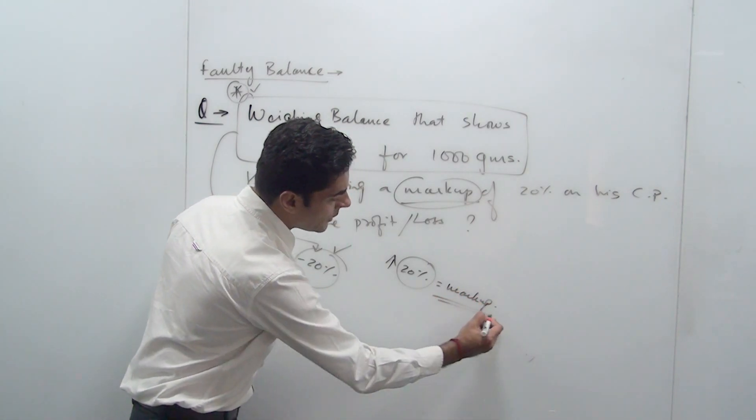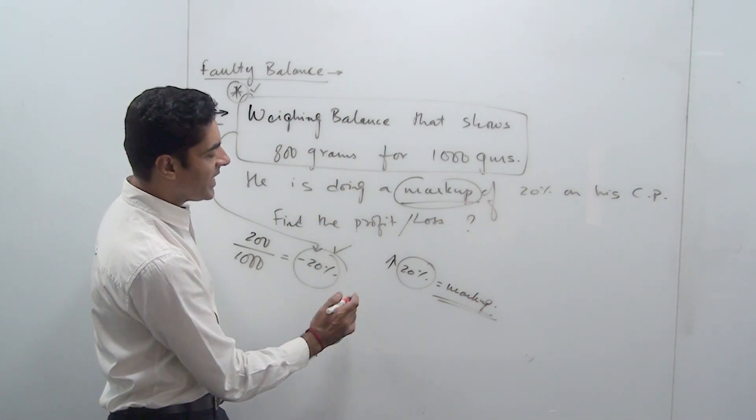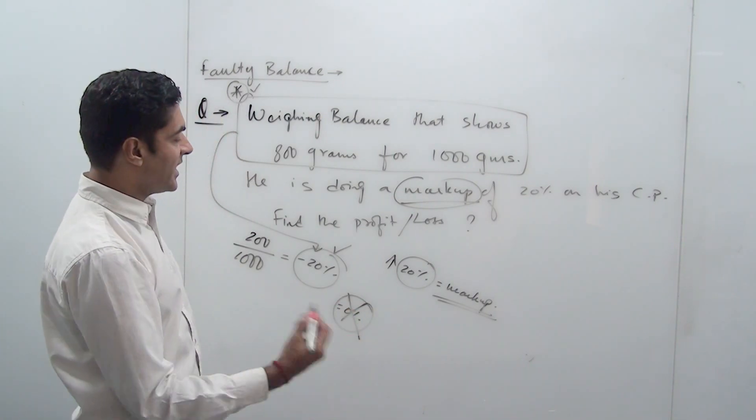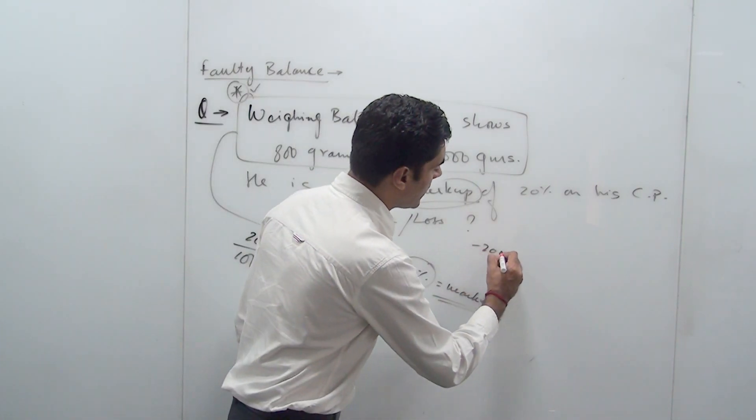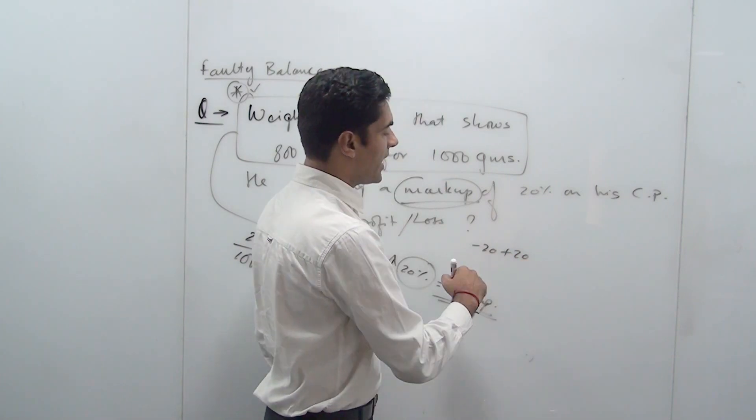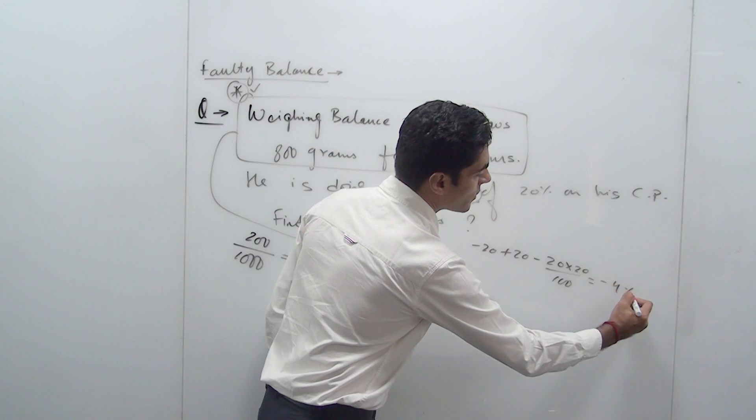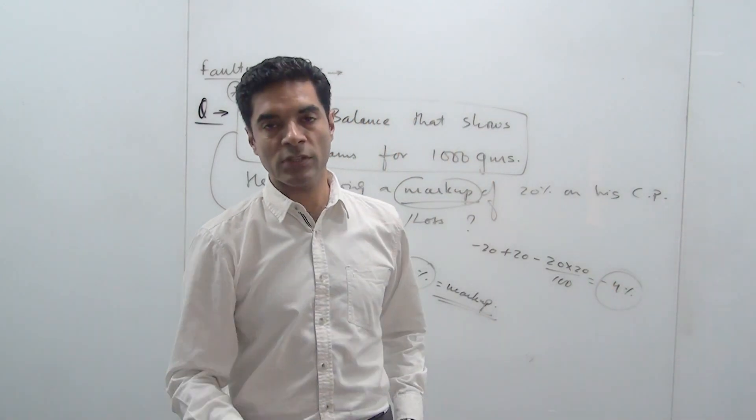Now as I have been telling you since beginning, these two factors do not compensate each other and give you 0%. That is wrong. It will go hand in hand successively. So there is a decrease of 20 and there is an increase of 20, which is minus a plus b minus a into b by 100, which will come out to be a decrease of 4%. So this is how you solve these kind of questions.